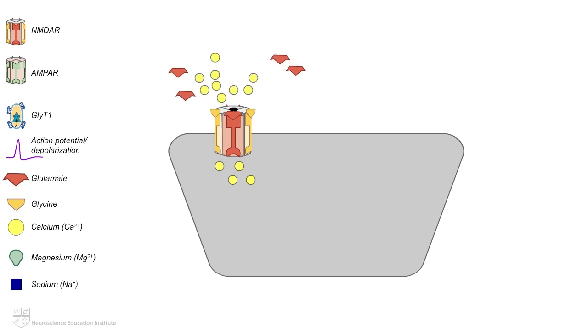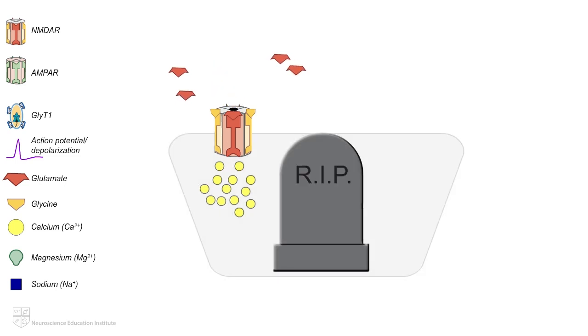One must be careful when it comes to ionotropic glutamate receptors, such as the NMDAR. Too much activation of the NMDAR by glutamate can lead to excess calcium influx, causing neuronal cell death via excitotoxicity.